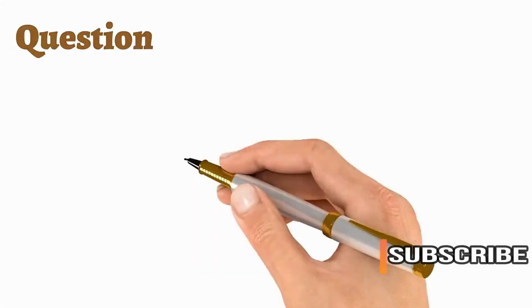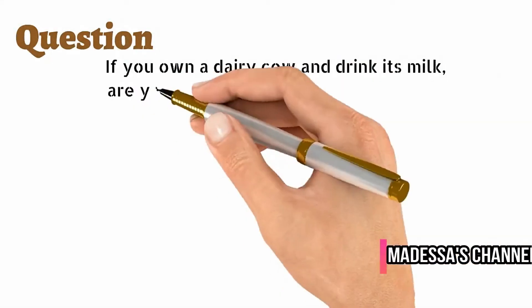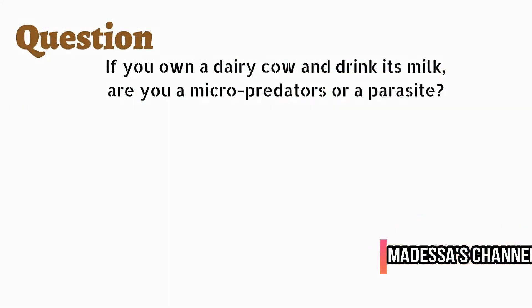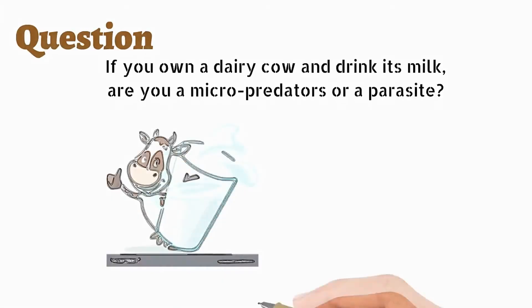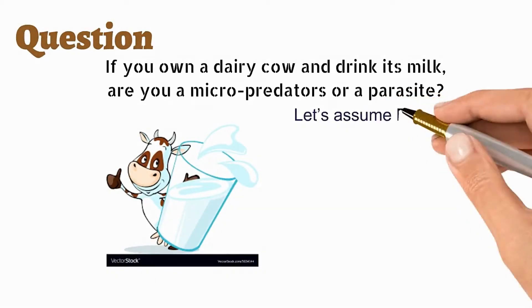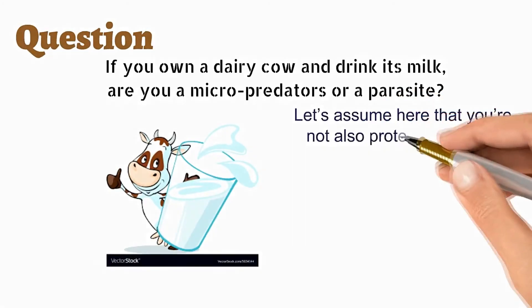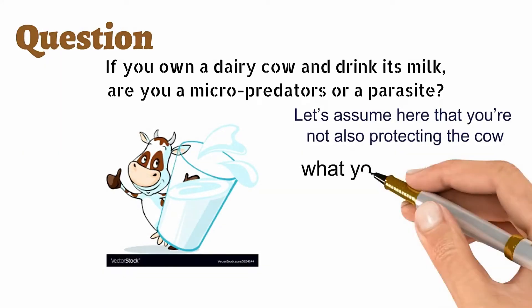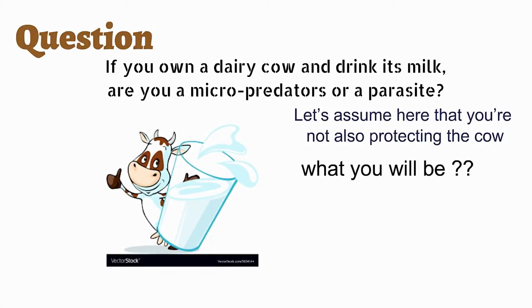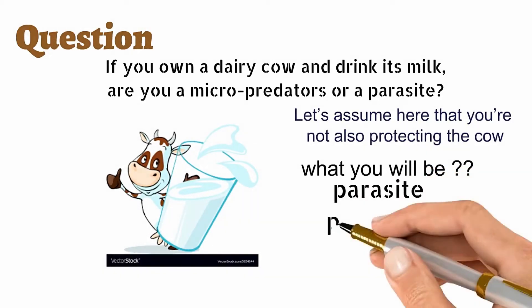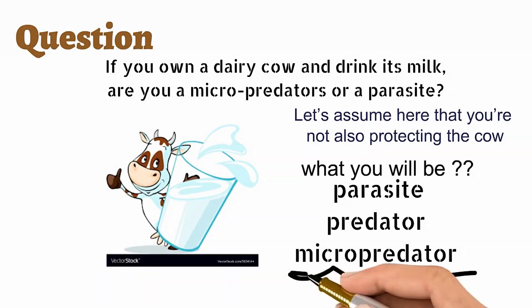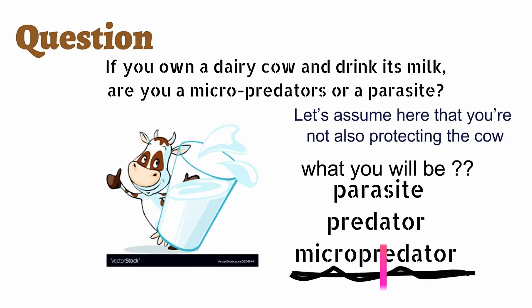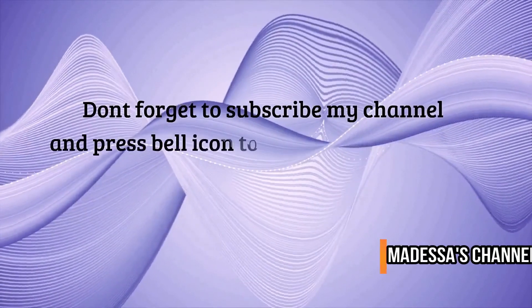Here is a question for you: if you own a dairy cow and take its milk — assuming you are not taking care of the cow — are you a micro-predator, a parasite, or a predator? Definitely, you would be the micro-predator, because you are not killing it.